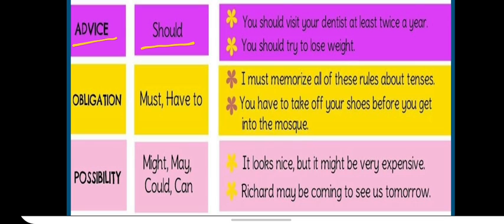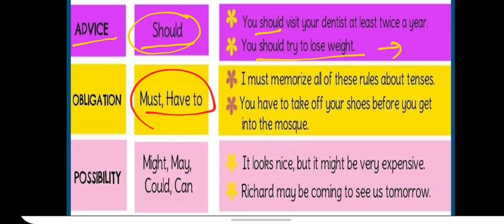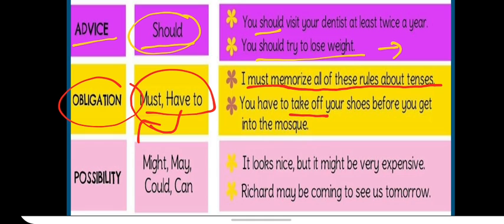Then when you are giving a piece of advice to someone, we use the modal verb should. You should visit your dentist at least twice a year. You should try to lose weight because you are now gaining it so much, which is not healthy. Then the word must and have to. We just discussed these words. It has similar usage with must. We use it for obligation, which means you are under certain rules and you have to obey them. I must memorize all of these rules about tenses. You have to take off your shoes before you get into the mosque. So before you get into the temple, you have to remove your shoes, and it is your obligation.